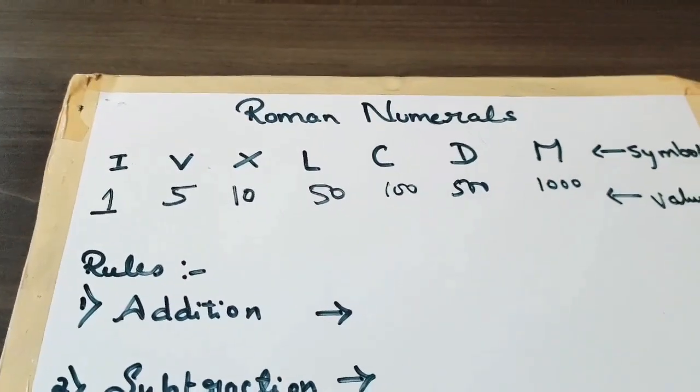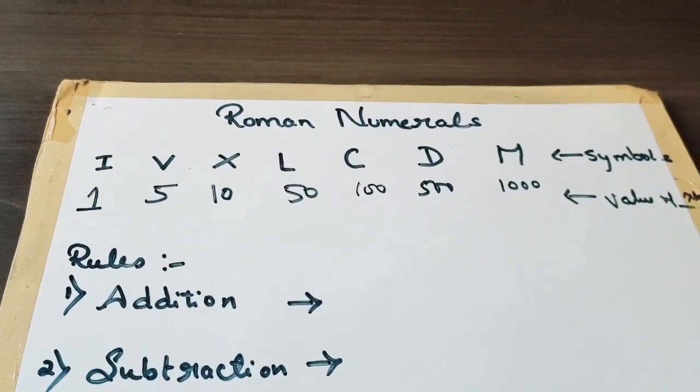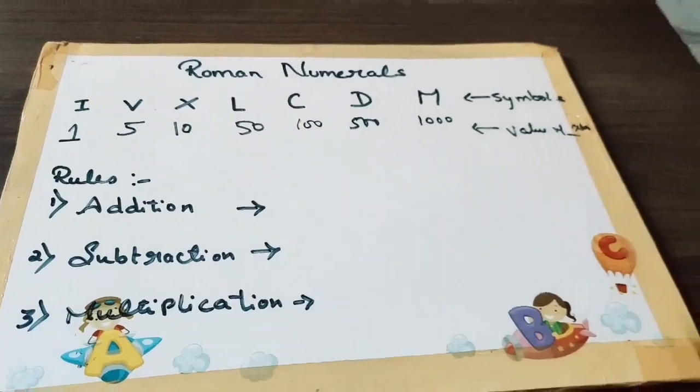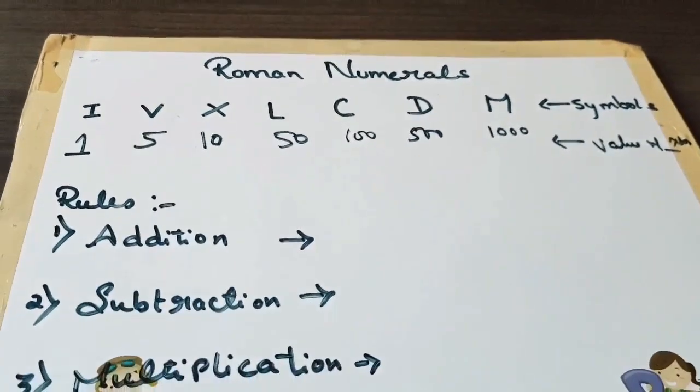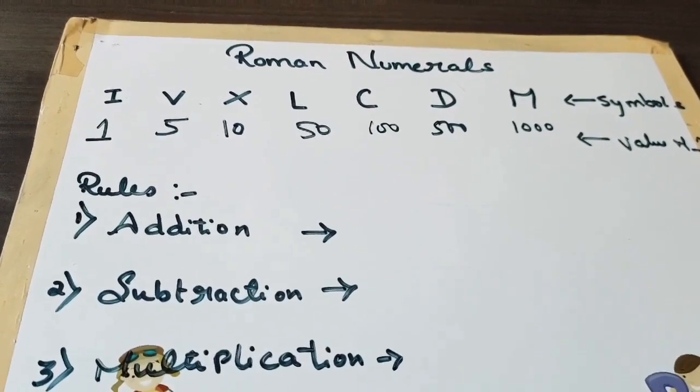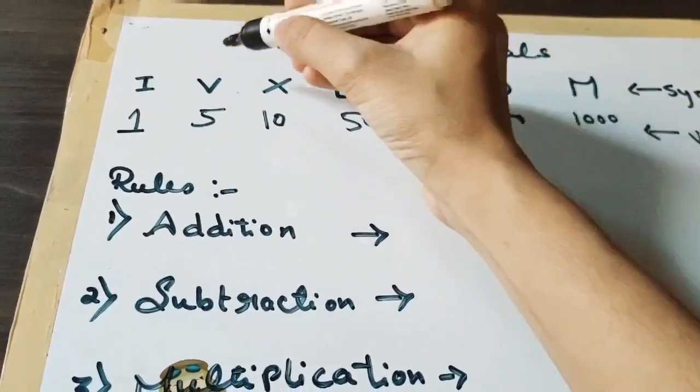So these are the seven symbols which you have to use in Roman numerals, and now there are some rules. Before going to the addition, subtraction, multiplication, I would like to tell you something very important.